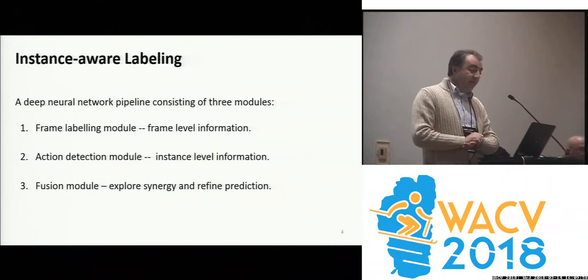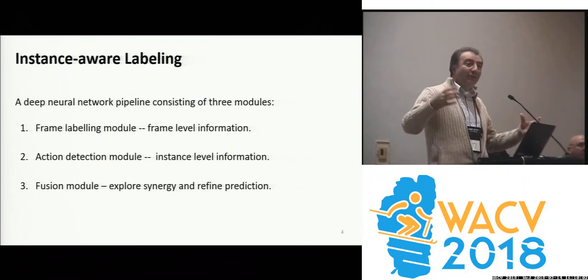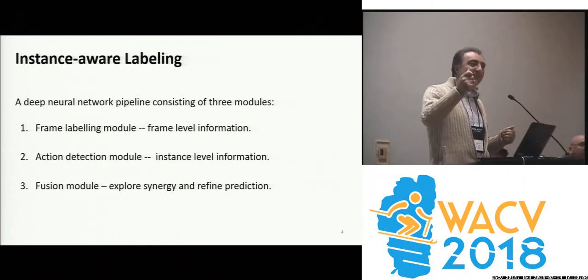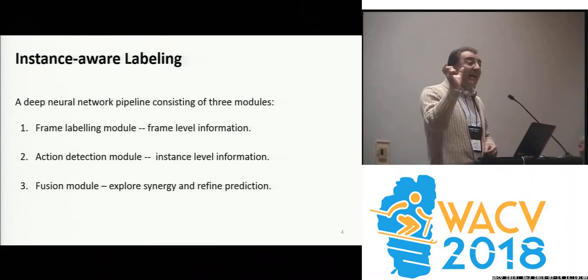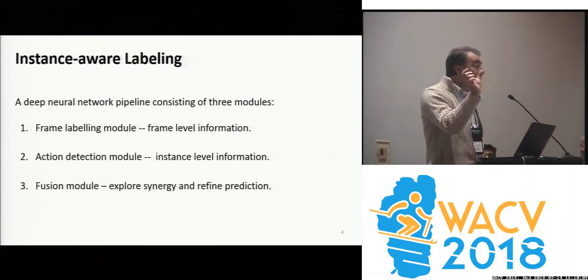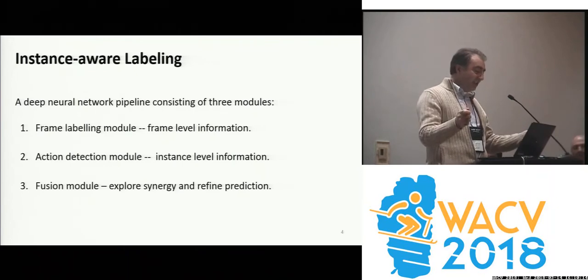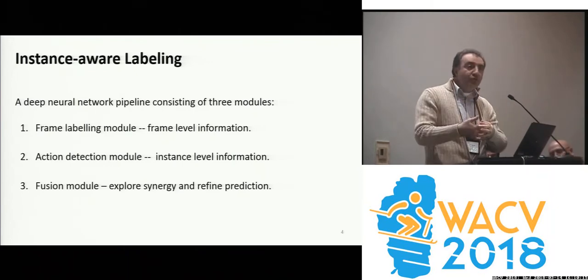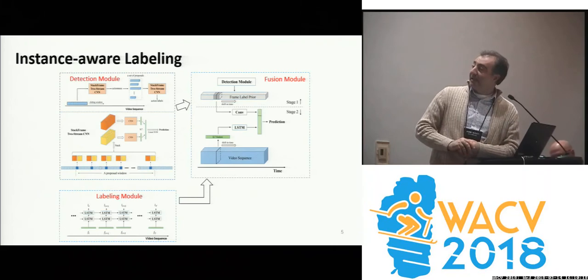The instance-aware labeling has two components. One is frame labeling — conventional: take the frame, apply something, and determine what the action is. The second is the action detection module, which tries to find the beginning and end of the action. There is also a fusion module to combine everything together.